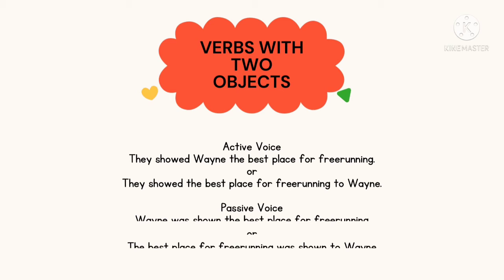The word order can be different but the meaning is the same. Please also note that 'to' and 'for' can be used before the indirect object, and the word order should be: subject + verb + direct object + 'to'/'for' + indirect object.